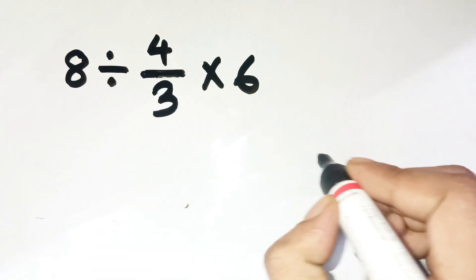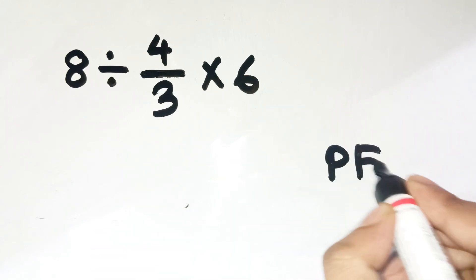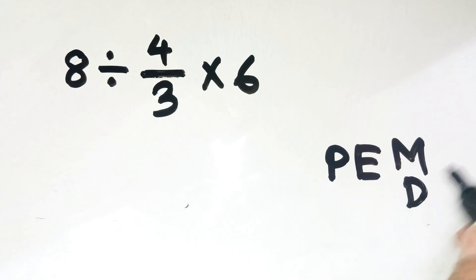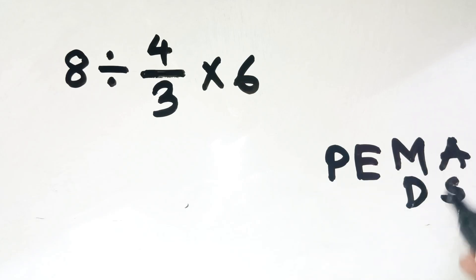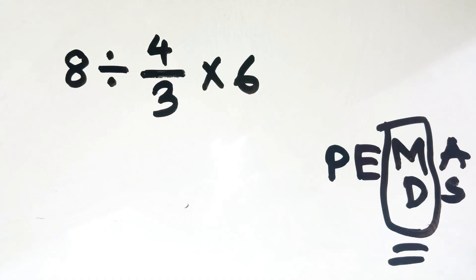Let's do this the proper way, following PEMDAS: parentheses, exponents, multiplication and division, addition and subtraction. Remember, multiplication and division sit on the same priority level — we go left to right.